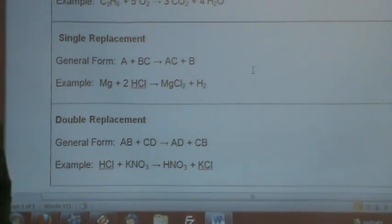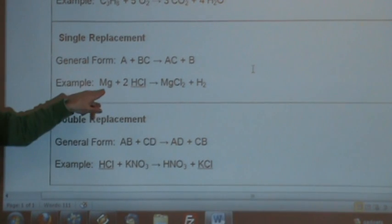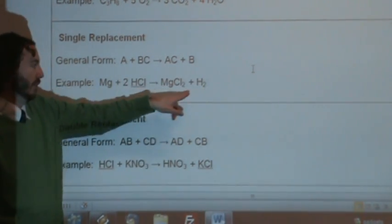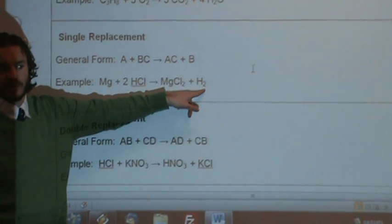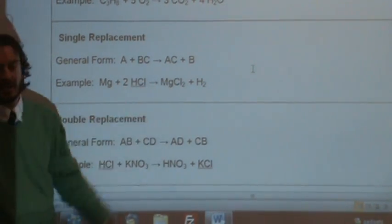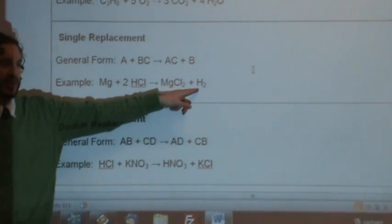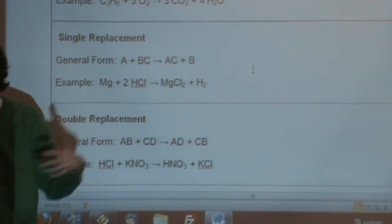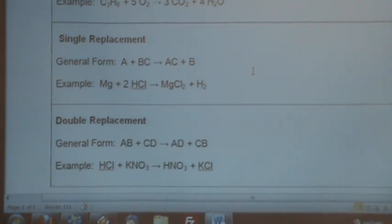For single replacement, you've got a single element and a compound, and essentially the A kicks the B out. So you get AC as a compound and B as the element by itself. This is really common with metals and acid. Here's a magnesium metal put into hydrochloric acid — the magnesium kicks the hydrogen out. You get hydrogen by itself. There's a 2 there because hydrogen is a sneaky seven. There's a 2 on the chlorine because Mg is positive 2 and Cl is negative 1, so you crisscross them to get MgCl₂.